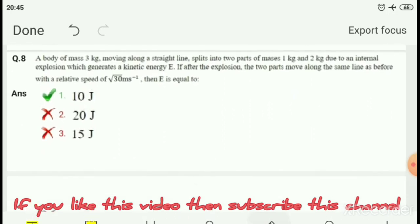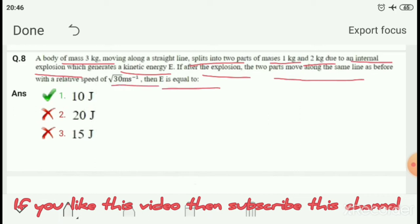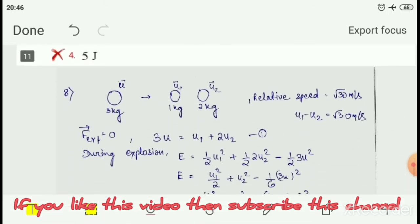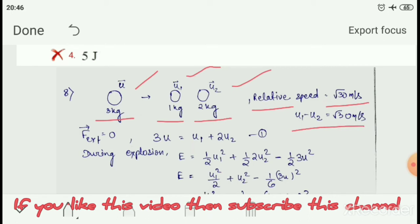Question number 8: A body of mass 3 kg moving along a straight line splits into two parts of masses 1 kg and 2 kg due to an internal explosion which generates kinetic energy E. If after the explosion the two parts move along the same line with a relative speed of root 30 meter per second, what is E? The relative speed is given as root 30, and the body mass of 3 kg split into 1 kg and 2 kg. We use conservation of momentum.